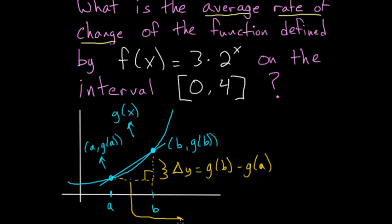And then this change in x here, the run, is just this x value of b minus this x value of a.